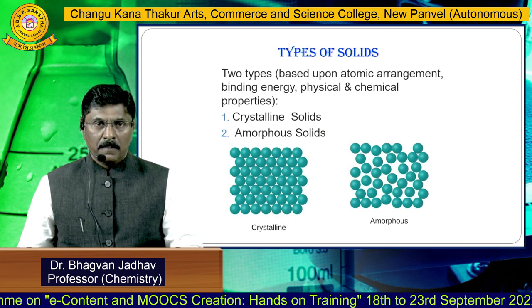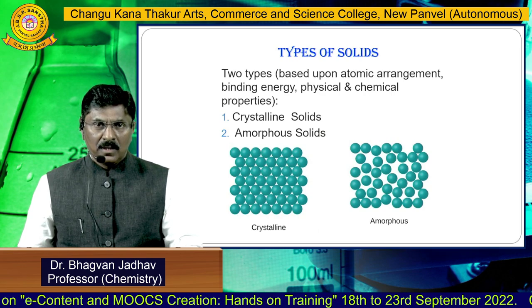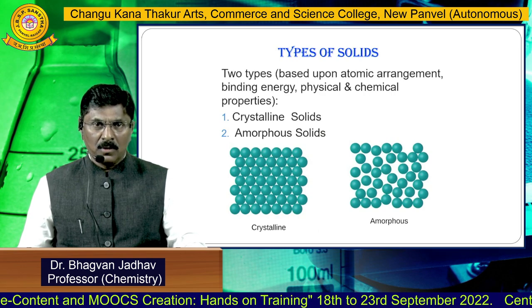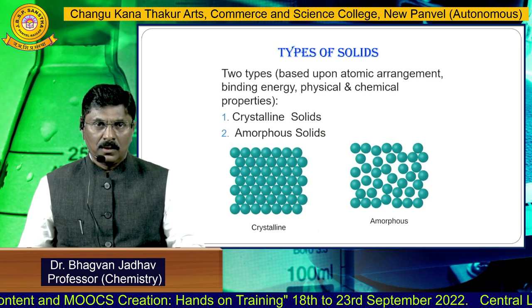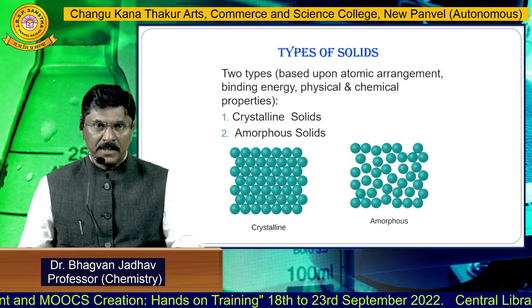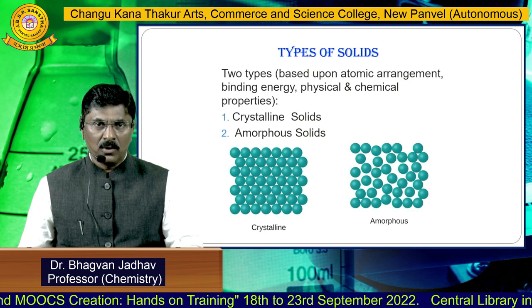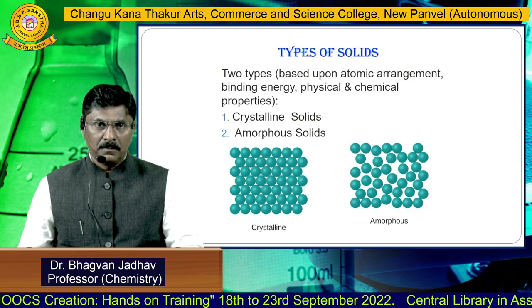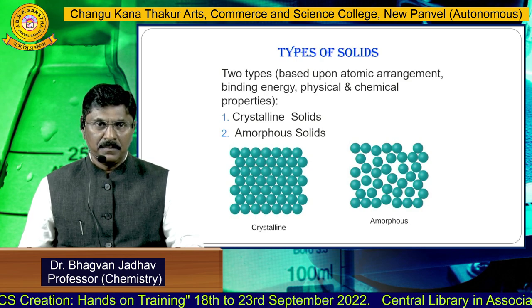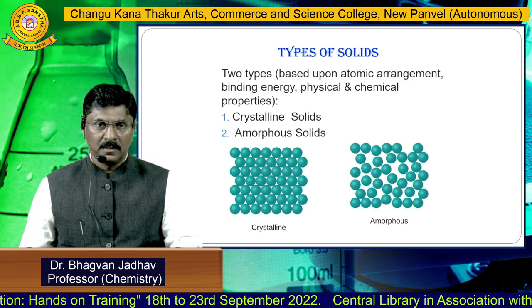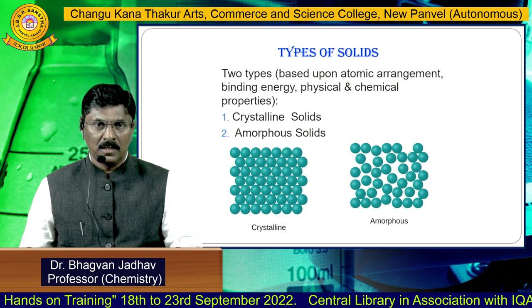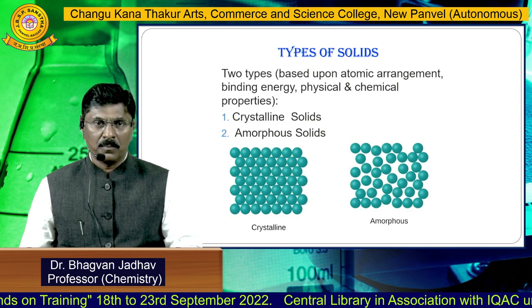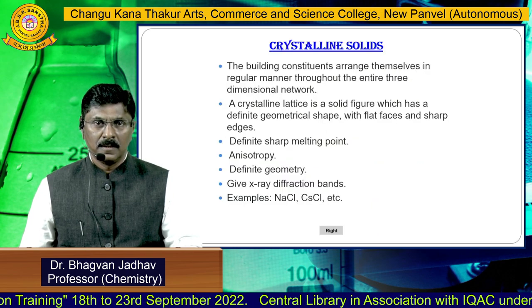There are two types of solids based on the atomic arrangement, binding energy, physical and chemical properties: the crystalline solids and amorphous solids.